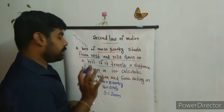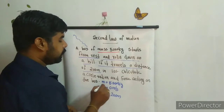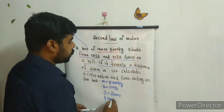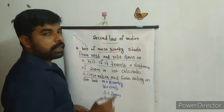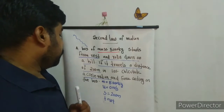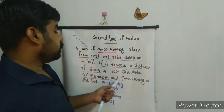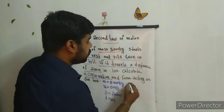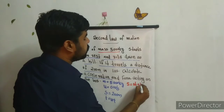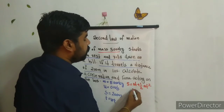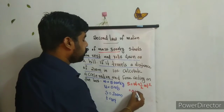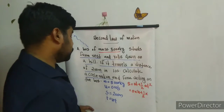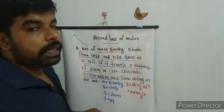To find the acceleration, we have u equals zero, s equals 200 metres, and time t equals 10 seconds. Since we have u, s, and t, we use the equation s equals ut plus half a t squared.